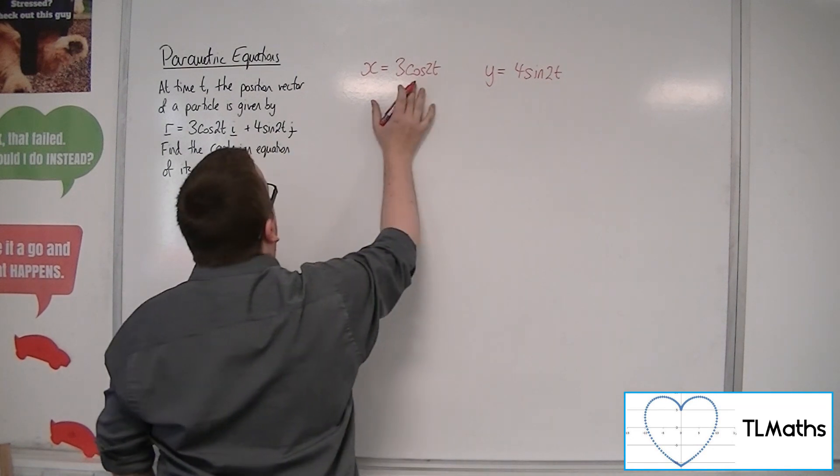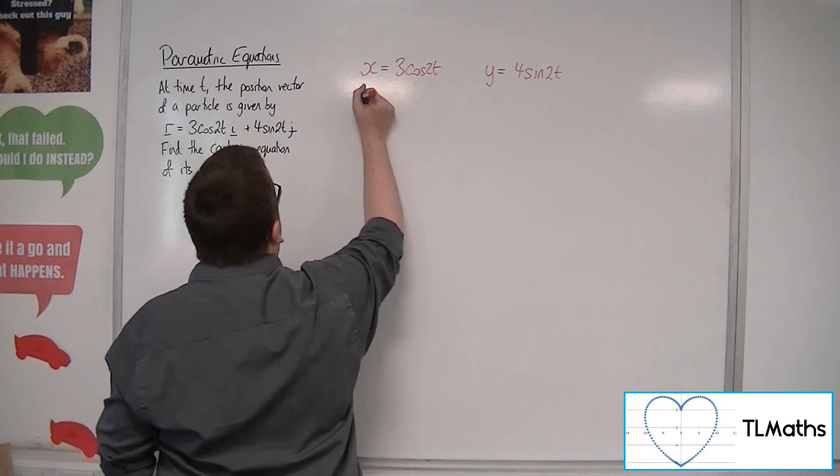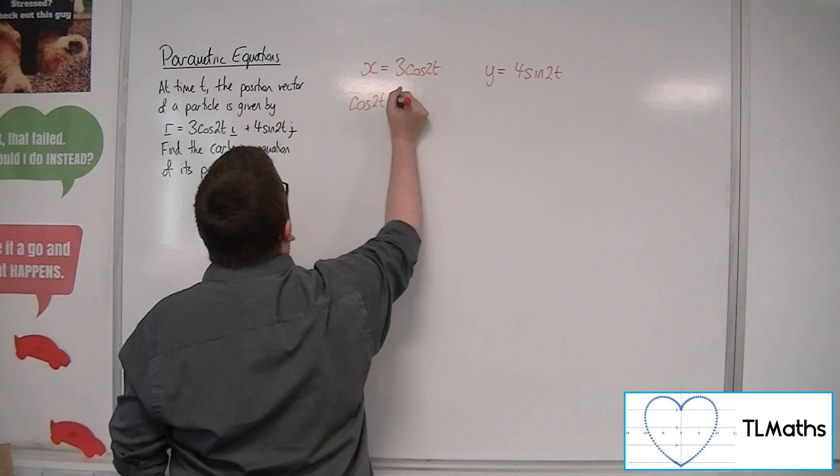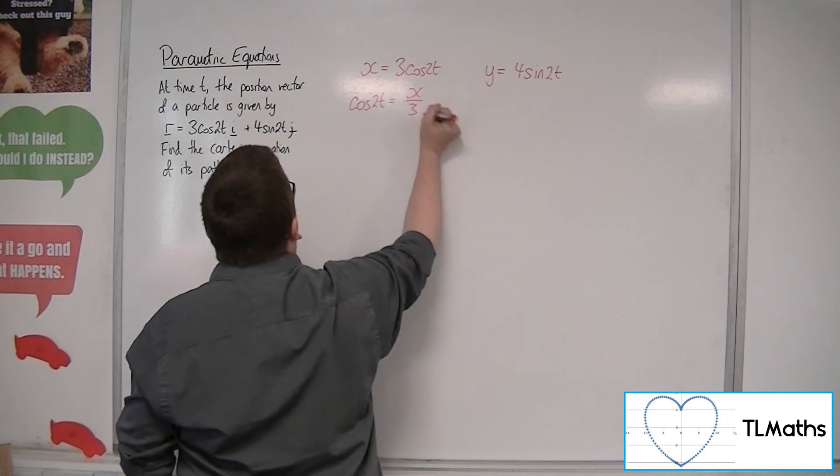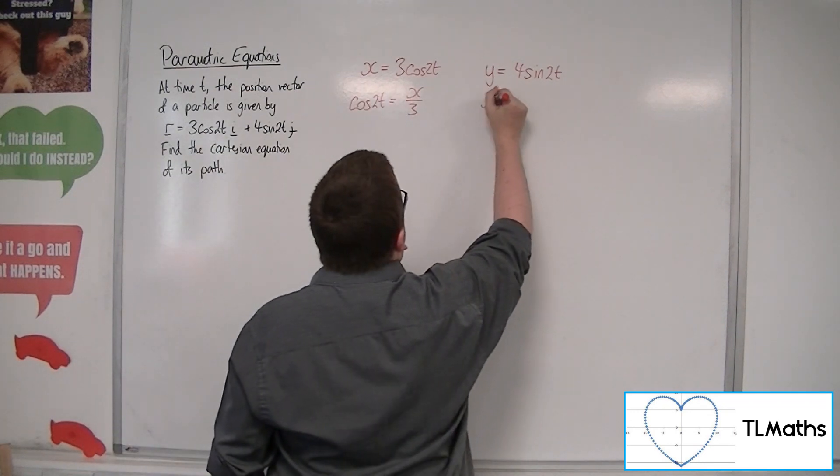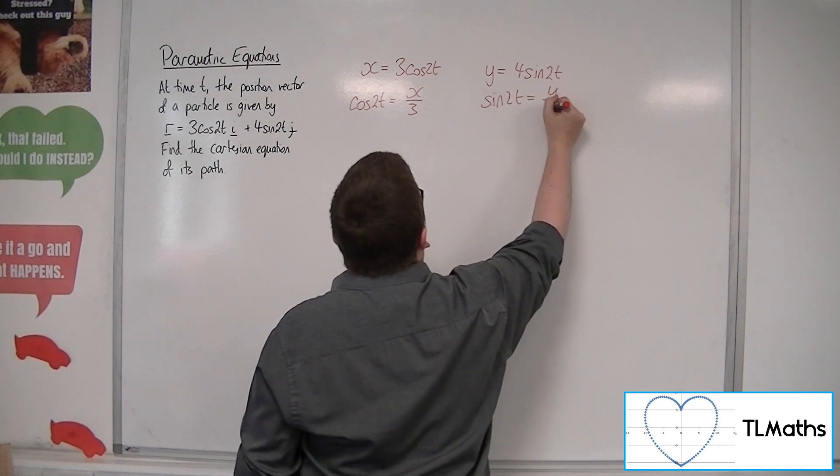Now if we make cos 2t the subject of this equation, we can divide both sides by 3. And over here we can write sine 2t is equal to y over 4.